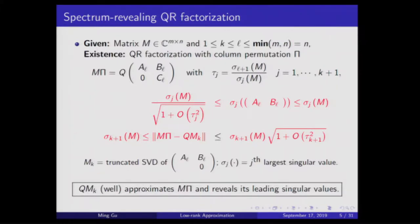Here τ_j is the ratio of singular values, where the indexing is such that you're looking for a rank-k approximation but you run the QR L times, where L is meant to be something bigger than k. The ratio τ_j depends on L and j — the smaller the index, the bigger the singular value. If L is rather bigger than j, you could expect the ratio to be very small, especially if your singular values decay.